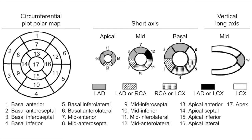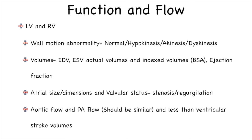I tend to avoid naming segments based on numbers; I would rather say 'mid lateral segment' rather than 'segment number 12' — it is easier to remember things that way. The second section of the report is about functional assessment and flow. LV or RV wall motion abnormality has to be commented upon — whether it is normal, hypokinetic, akinetic, or dyskinetic. I only comment on abnormal segments and bunch them together. For example, I would say 'hypokinesis in mid and apical anterior, mid-anteroseptal, and apical septal segments' rather than listing each segment individually. This makes the report more concise and easier to interpret.